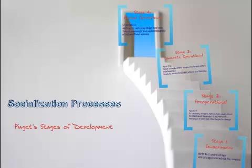There have been several theorists who have contributed to the field of socialization theory: Charles Cooley with his Looking Glass Self Theory, George Herbert Mead and his Stages of Self Theory, Eric Erickson's Eight Stages of Development, Lawrence Kohlberg's Moral Development Theory, and Carol Gilligan's responses to Kohlberg's shortcomings. But we're going to concentrate in this lecture on Jean Piaget.